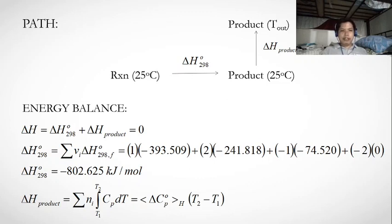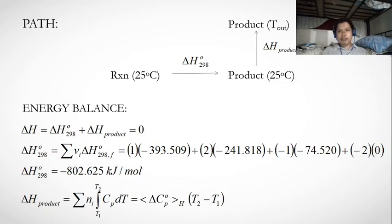The reaction path starts at 25°C (298 K). Using the standard enthalpy at 298 K, the reactants go to products at 25°C via the standard enthalpy of reaction, and then the products are heated from 25°C to the outlet temperature T_out — which is the maximum temperature after combustion.